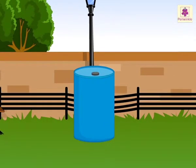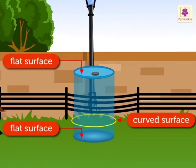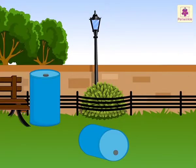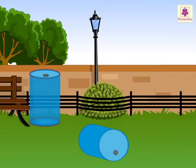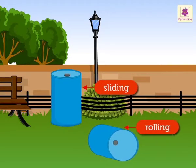Do you know? This drum has two flat surfaces as well as a curved surface. When the flat surface is on the ground, the drum slides. However, when the curved surface faces the ground, the drum rolls.